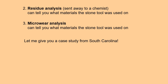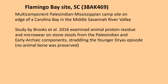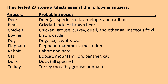Let me give you a case study from South Carolina. At Site 38 AK-469, located on Flamingo Bay, a multi-component Paleo-Indian through Mississippian campsite was found on the edge of this Carolina Bay in the Middle Savannah River Valley. Brooks and others examined animal protein residue as well as microware on stone tools dating from the Paleo-Indian and early Archaic components, straddling the Younger Dryas episode. As is typical of sites in South Carolina, no actual animal bone was preserved. They found all modern fauna in both components — that is, they were finding modern species rather than megafauna.